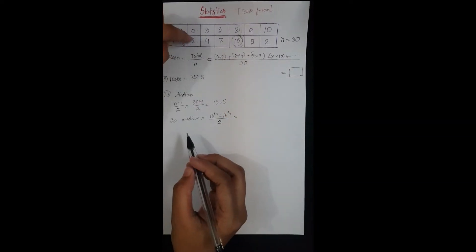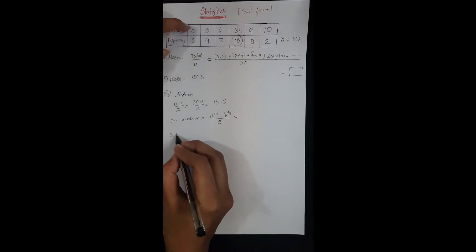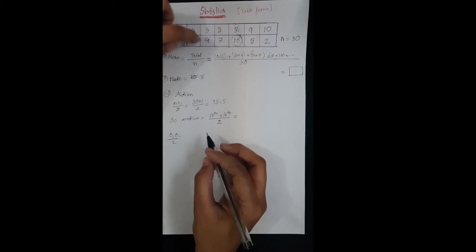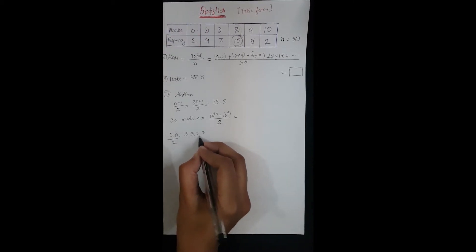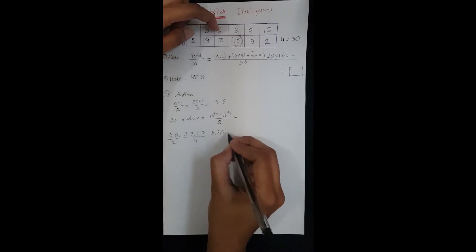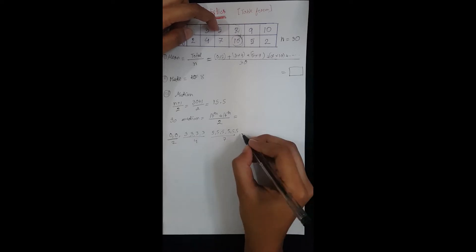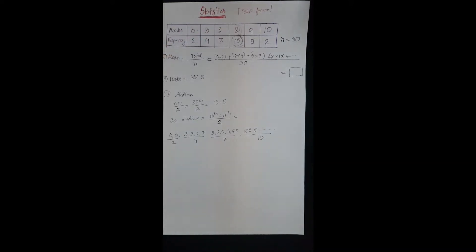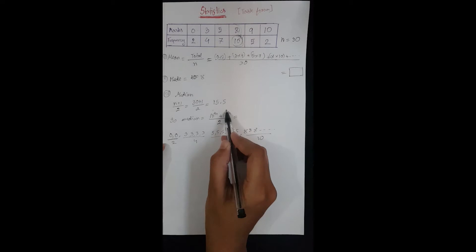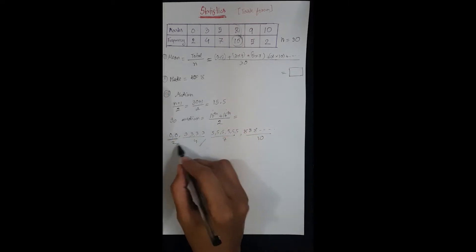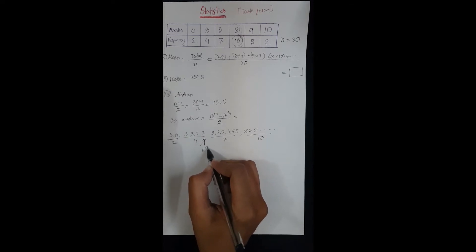For example, '0, 2' means the first two students got 0, so we write 0 twice. 3 is scored by 4 students, so we write 3 four times. 5 is scored by 7 students, so we write 5 seven times. Then 8 will be written 10 times.